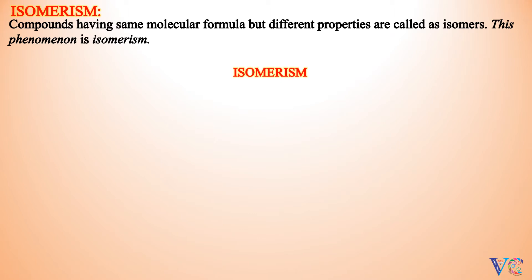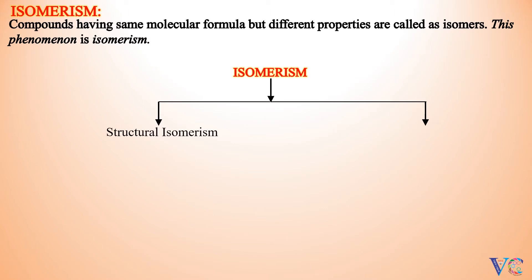Isomerism is basically of two types: Structural Isomerism and Stereo Isomerism. Further, Structural Isomerism is mainly of three types.